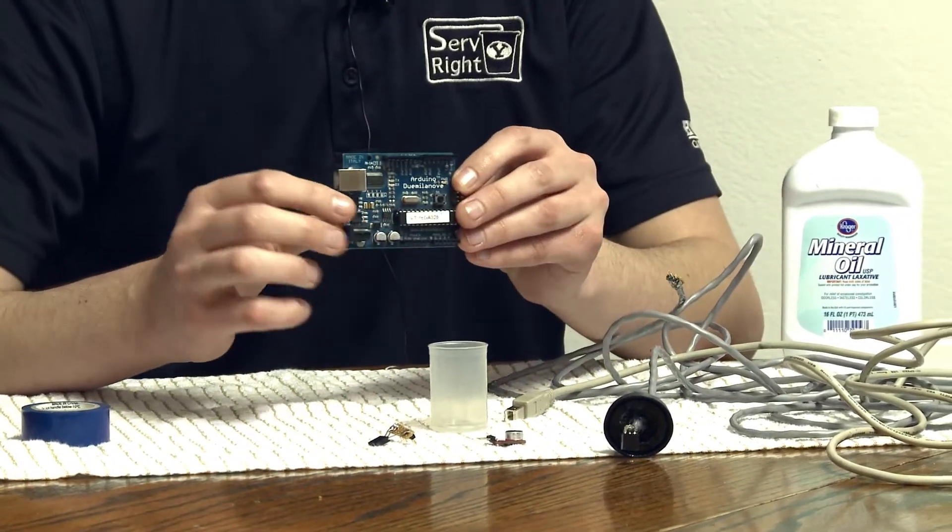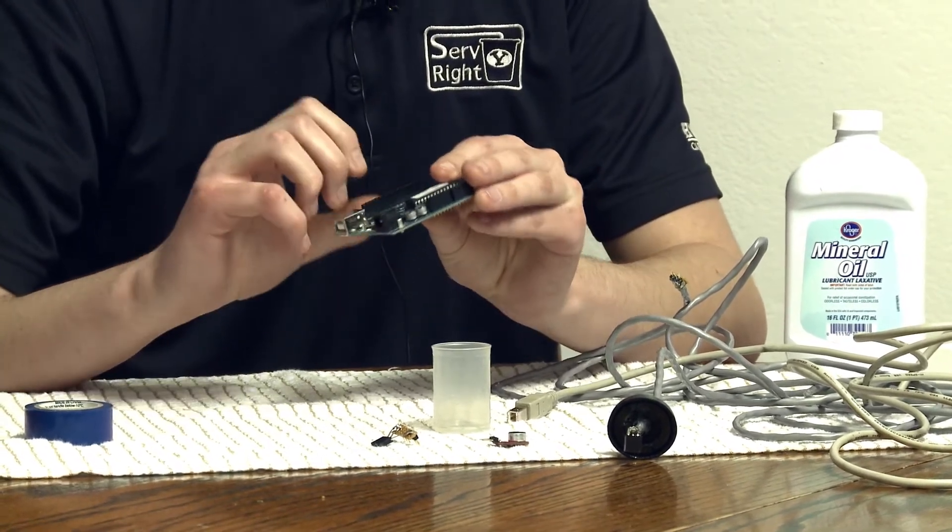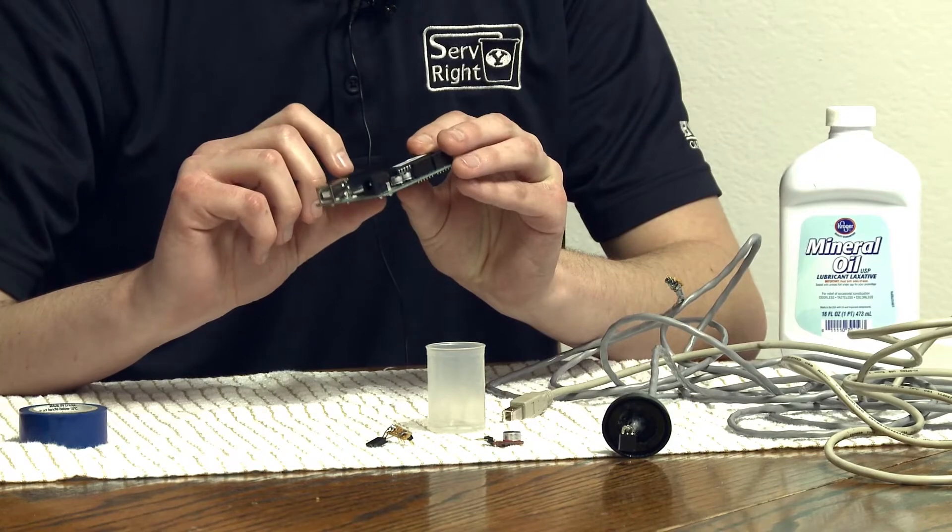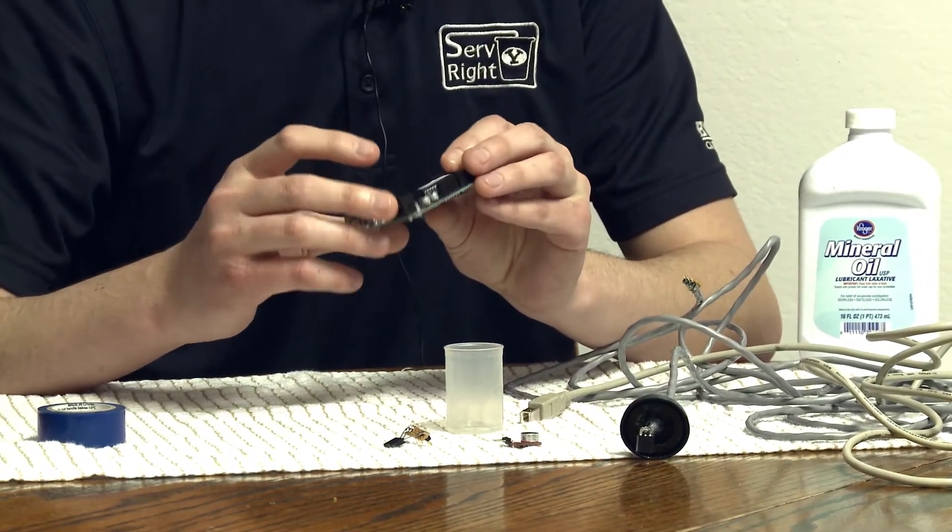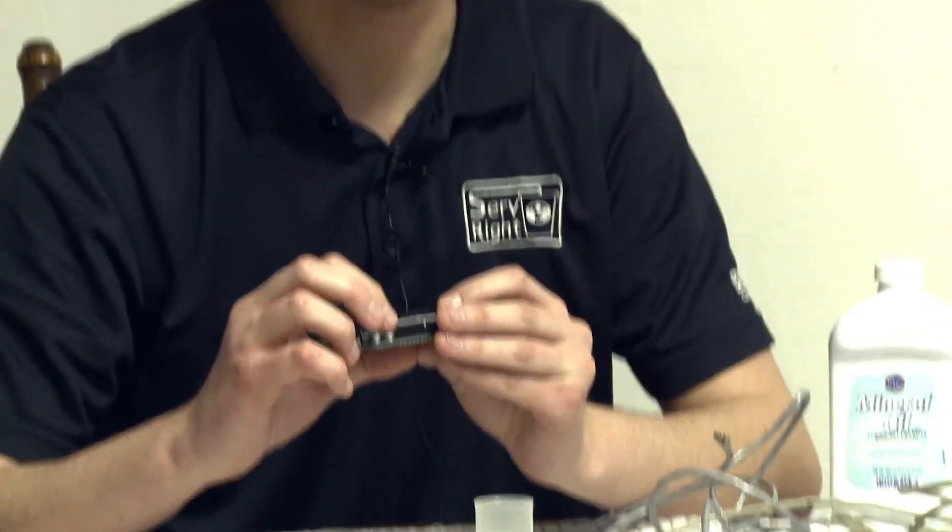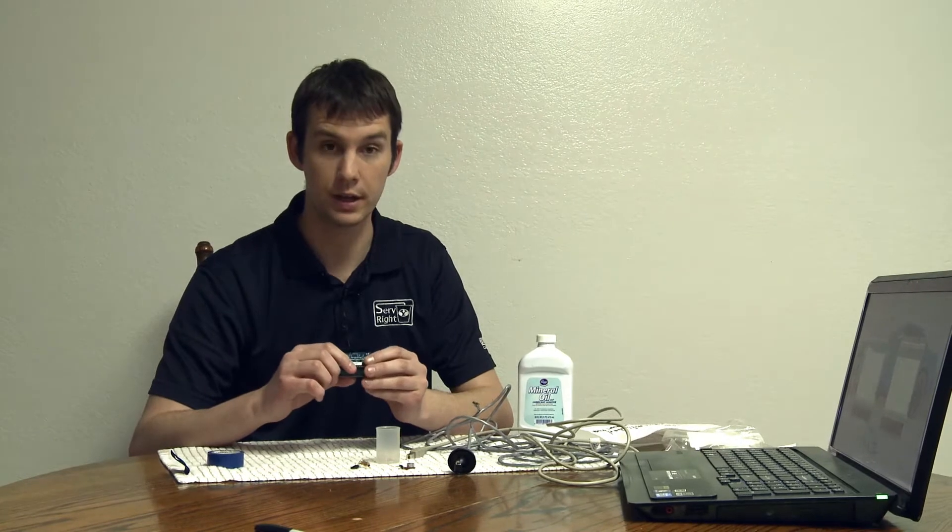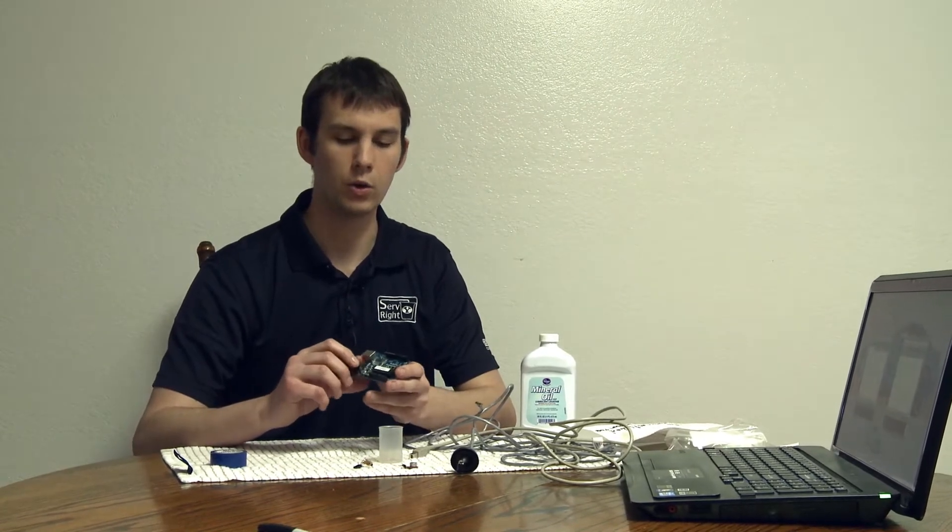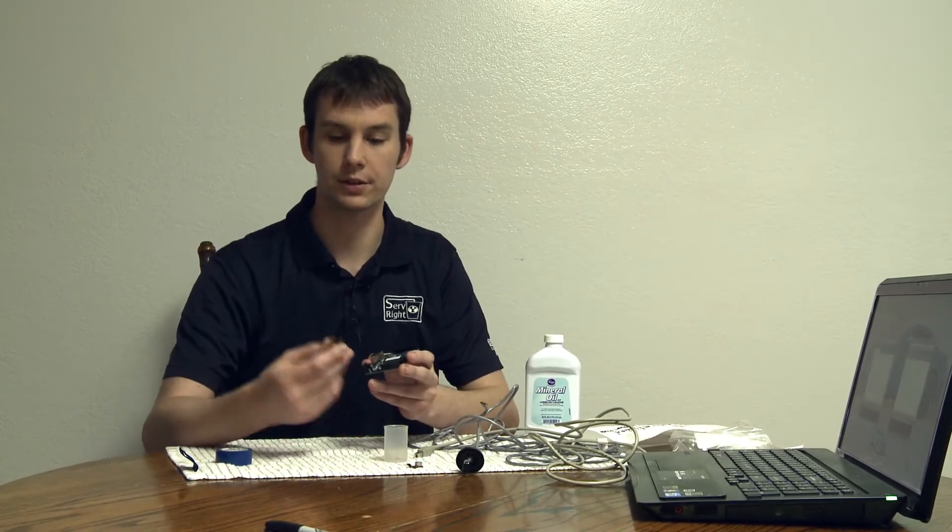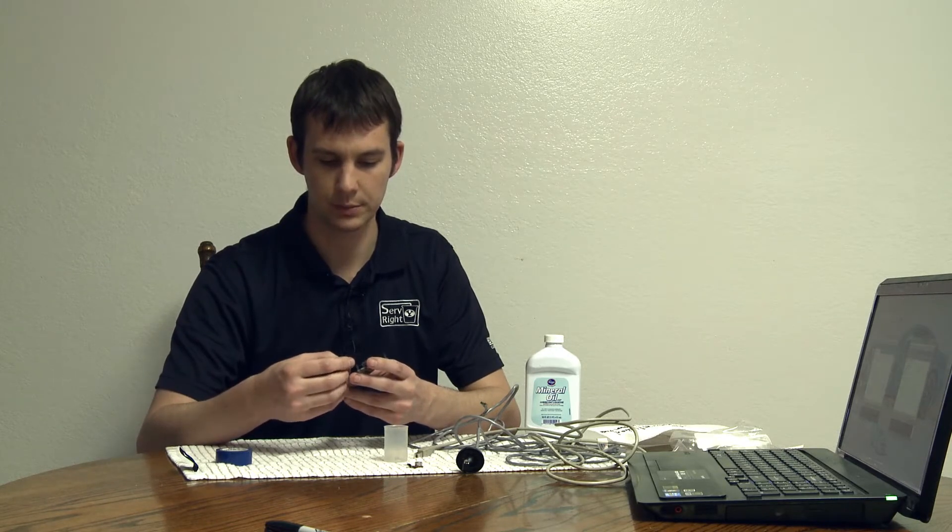You can just put the ends of the cable into the different slots on the Arduino that you need. There's a ground, 5-volt, and audio connection. Or you can build a little connector like this like I did. That makes it a whole lot easier to just slide it in.